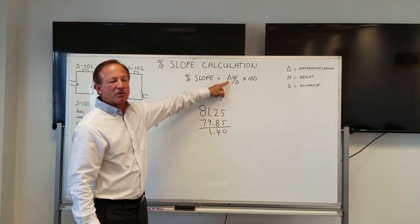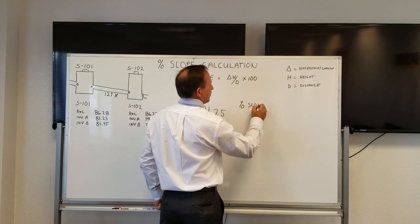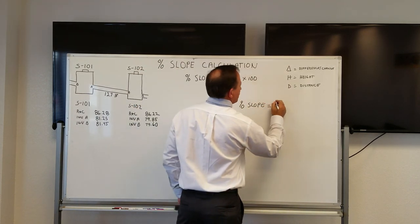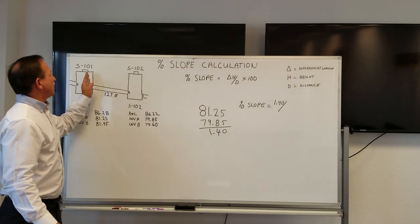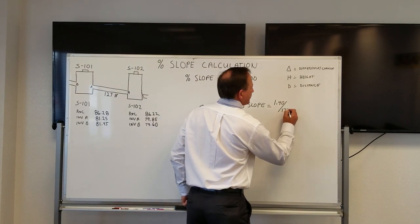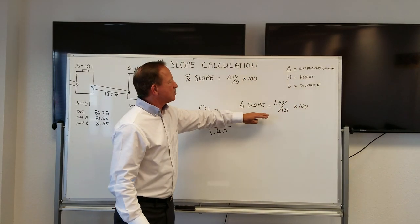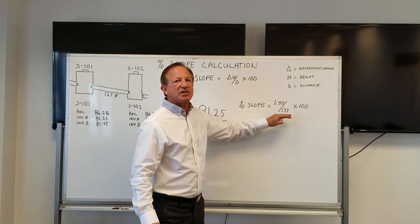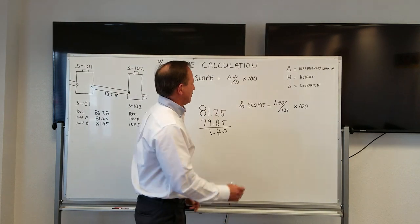So looking at this, we've just figured out the first part of our equation. Let's write the equation down: percent slope is equal to the change in height, which we just calculated is 1.40, divided by the distance. What distance? The distance between the two structures, which is given on the prints, is 127 linear feet. So 127 goes here times 100. The 100 is just a factor that will change us. When you divide 1.4 by 127, you get a decimal. Multiplying by 100 changes it into the percent number that you need for entering into the pipe laser.